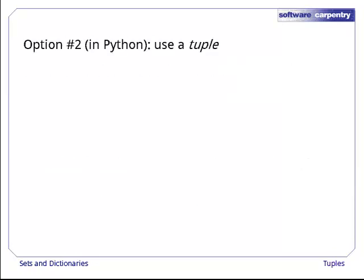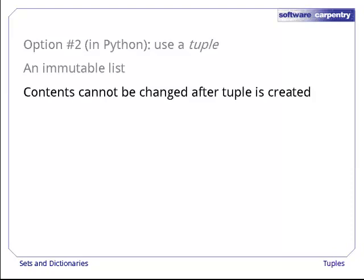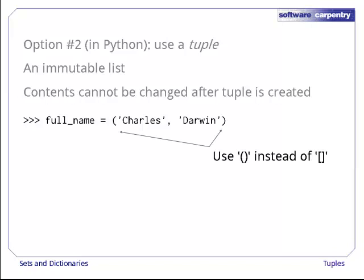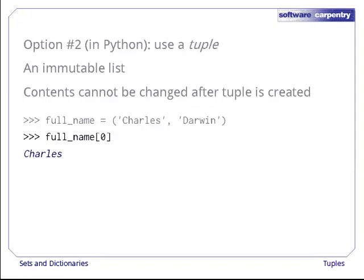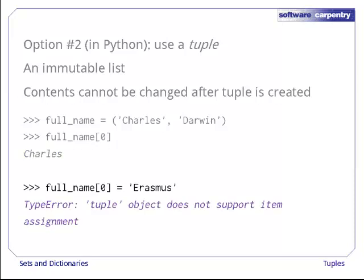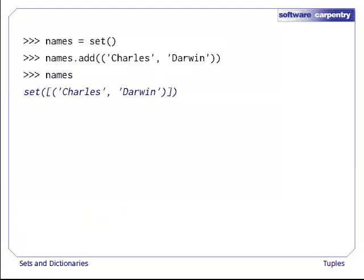The second option — the right one — is to use tuples instead of lists. A tuple is just an immutable list, i.e., a sequence of values that cannot be changed after its creation. Tuples are created exactly like lists, except we use parentheses instead of square brackets. They are indexed the same way, and functions like len do exactly what you'd expect. But you cannot assign a new value to a tuple element — you cannot change the tuple after it has been created. This means that a tuple's hash code never changes, and that means tuples can be put in sets. We'll see other uses of tuples in later lectures.